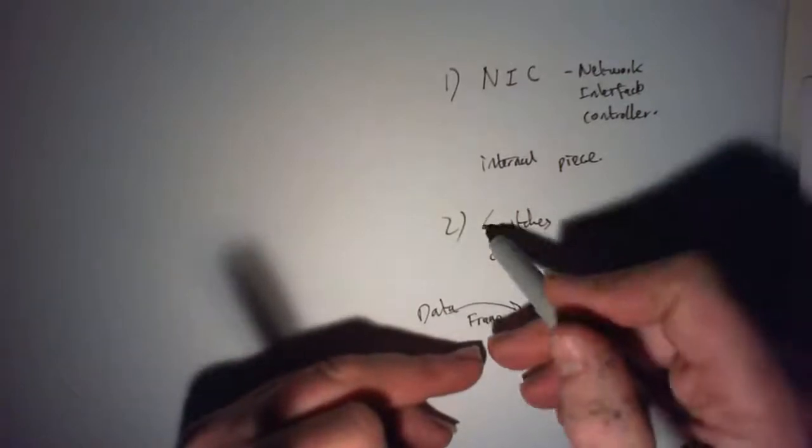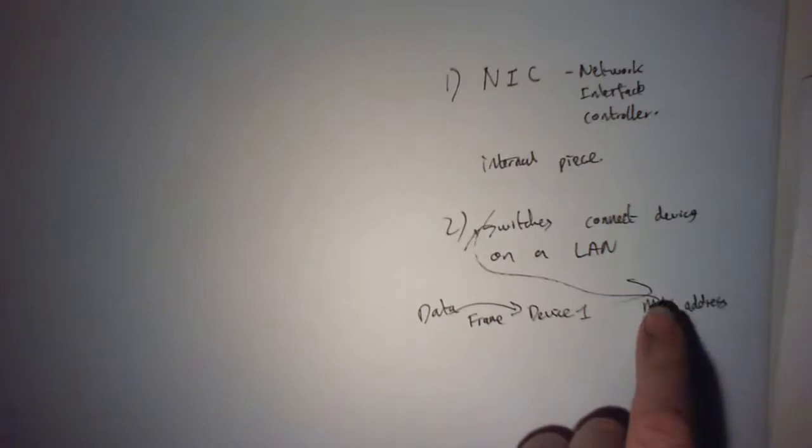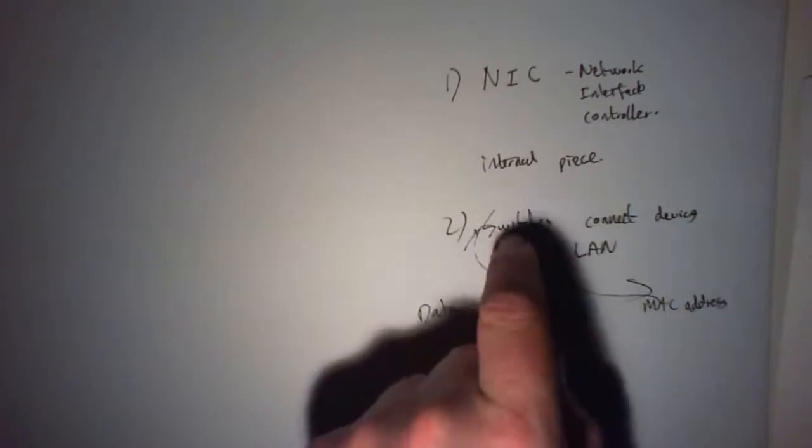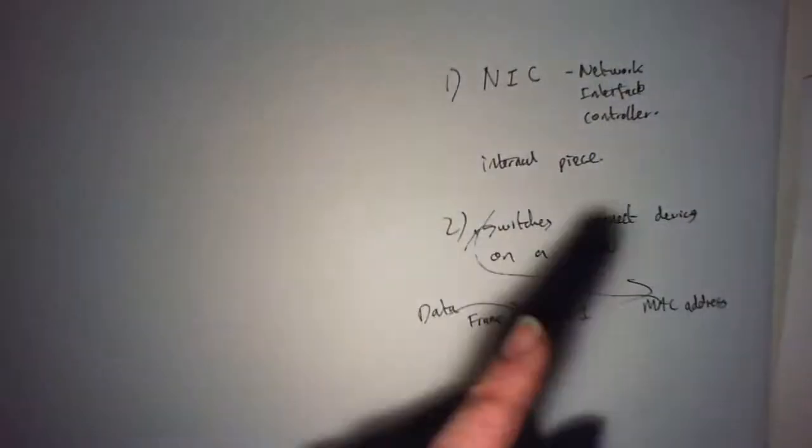So switches and MAC addresses go hand in hand. They basically, for want of a better word, the MAC address is like the postcode. It's specific to each device. The switches are kind of like the postman. It knows where to send the package inside the LAN.